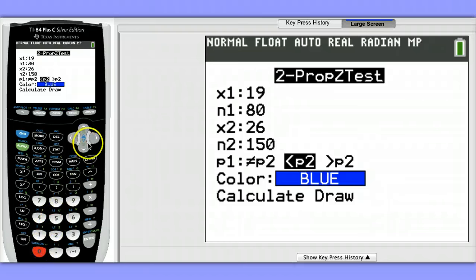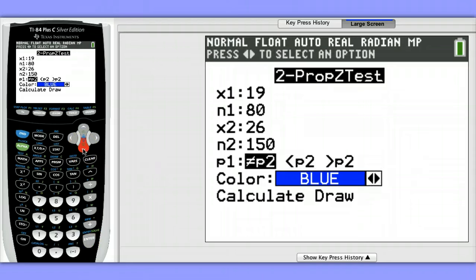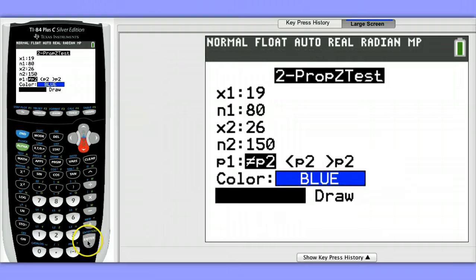Because the researchers are interested in just determining if there's a difference and don't have a suspicion as to what direction the difference might be, we're going to choose the not-equals option, the two-tail option. Color we'll leave as blue and we'll come down here to calculate.